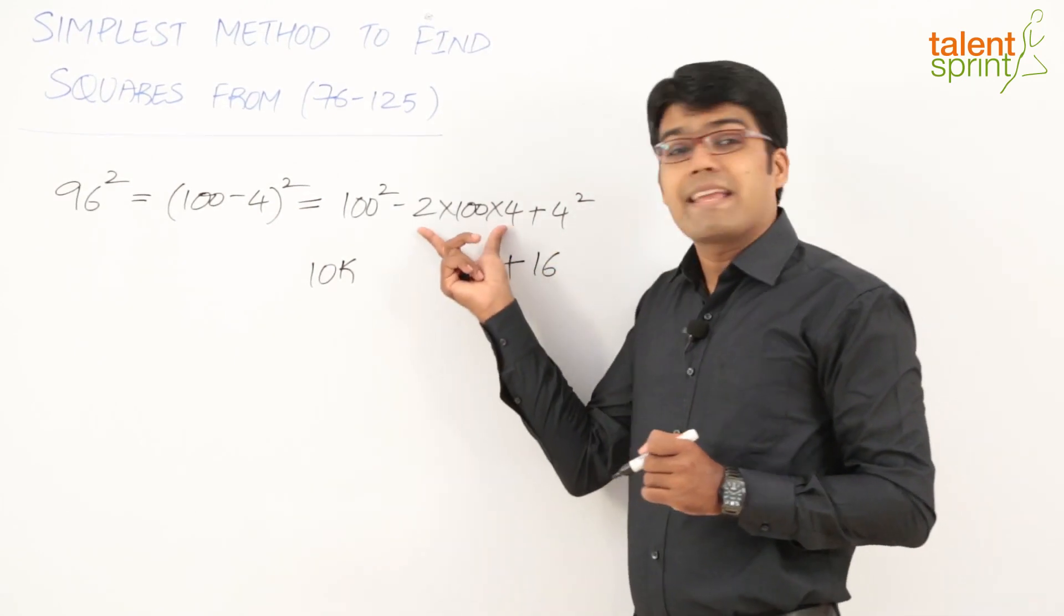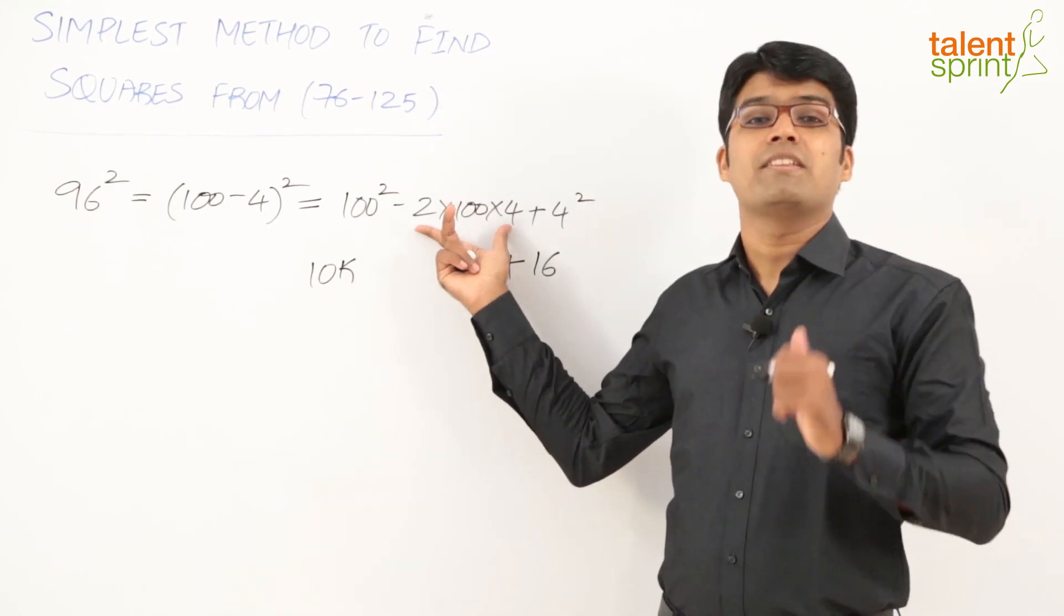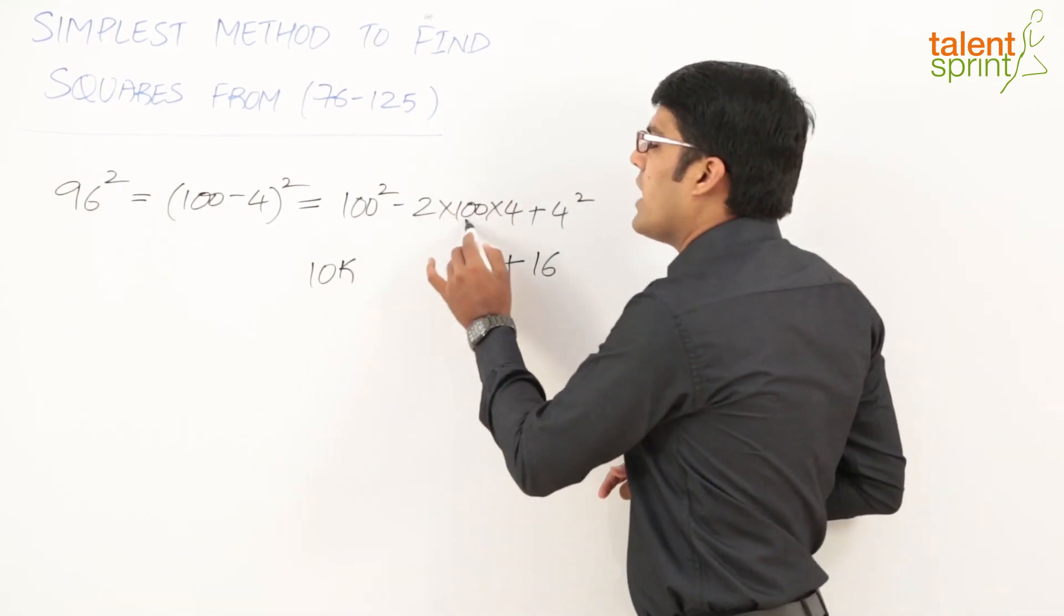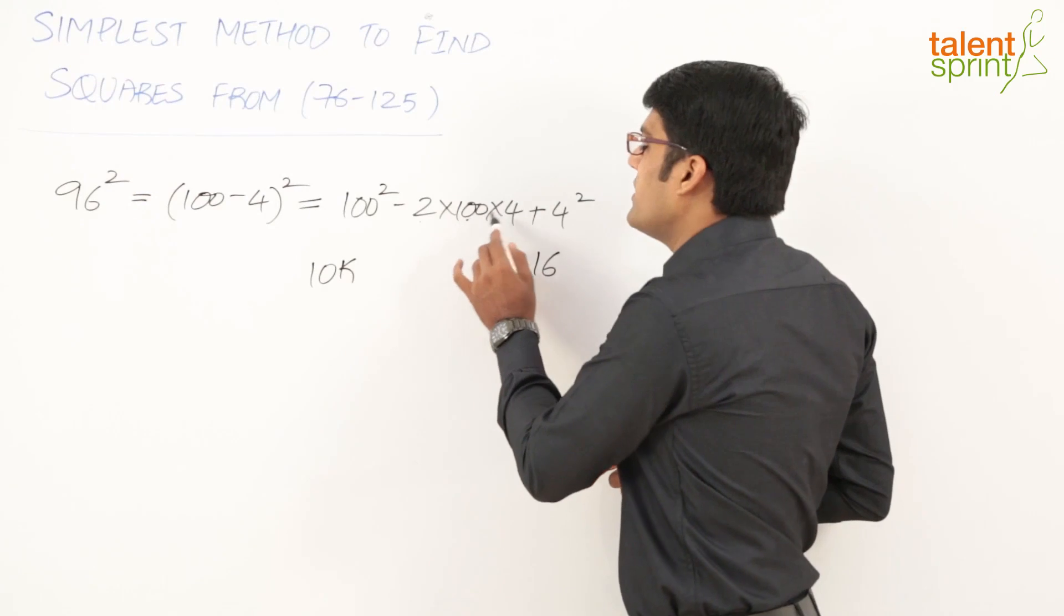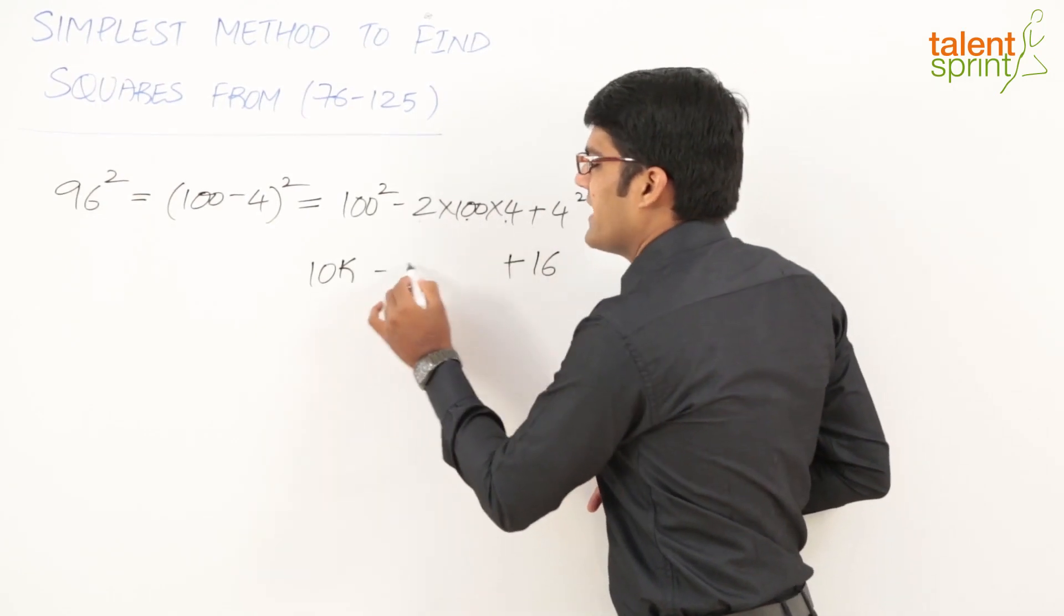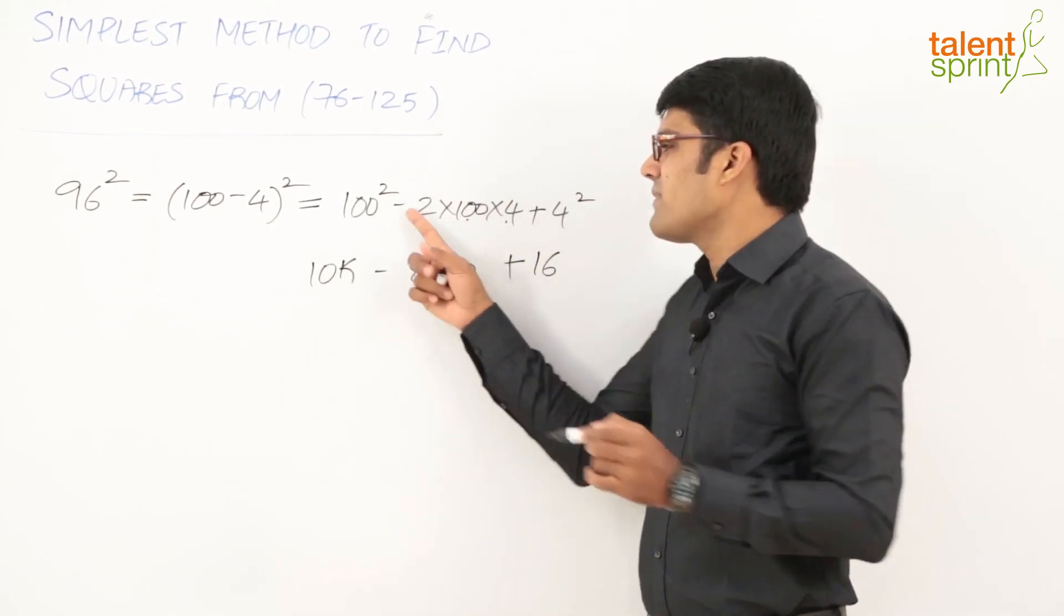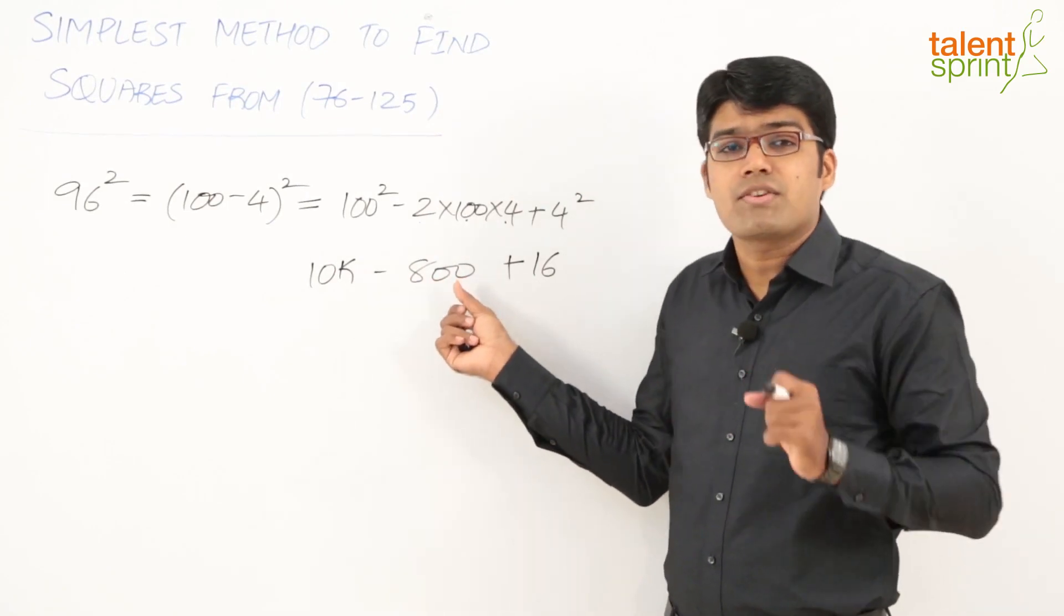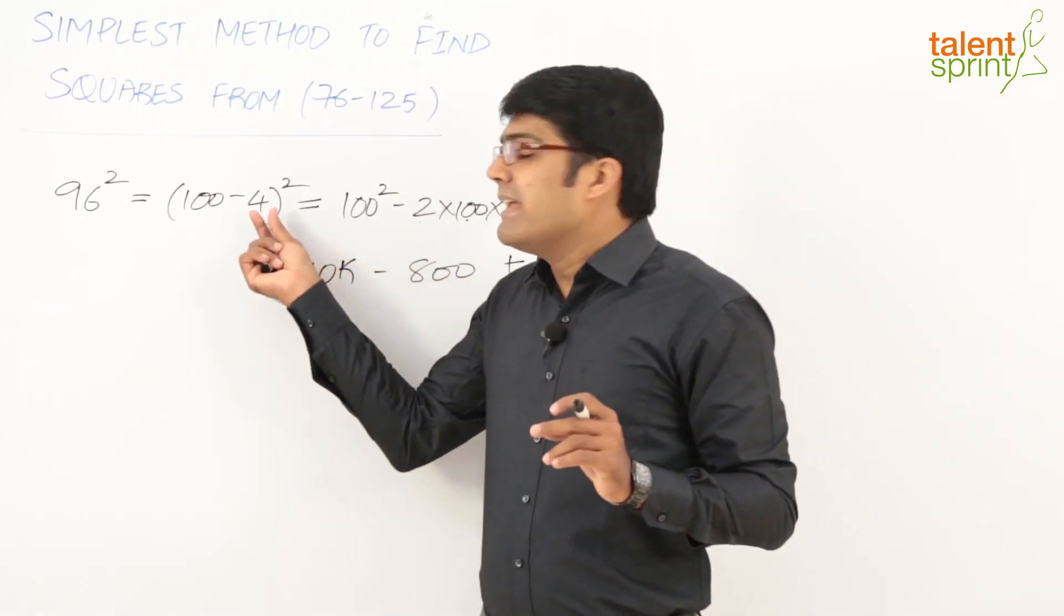Now how do we get the second part, the 2ab or -2ab? See, 2×100 is 200, 200×4 is 800, so we can say -800 here because we have a negative sign.